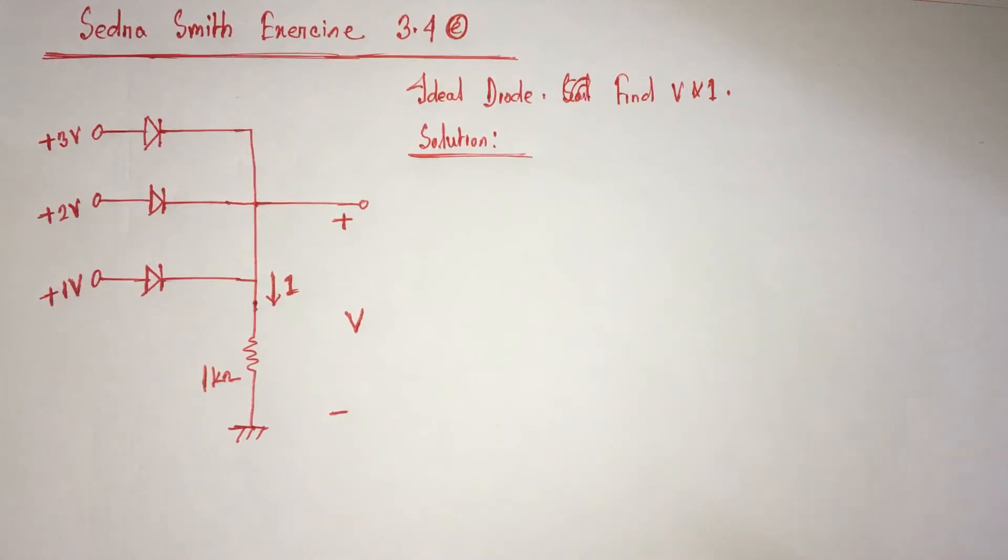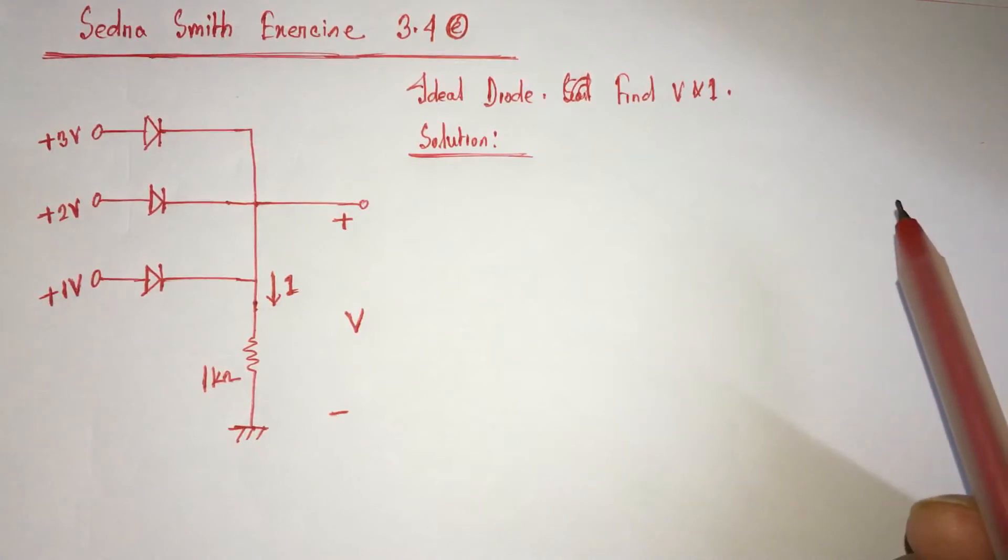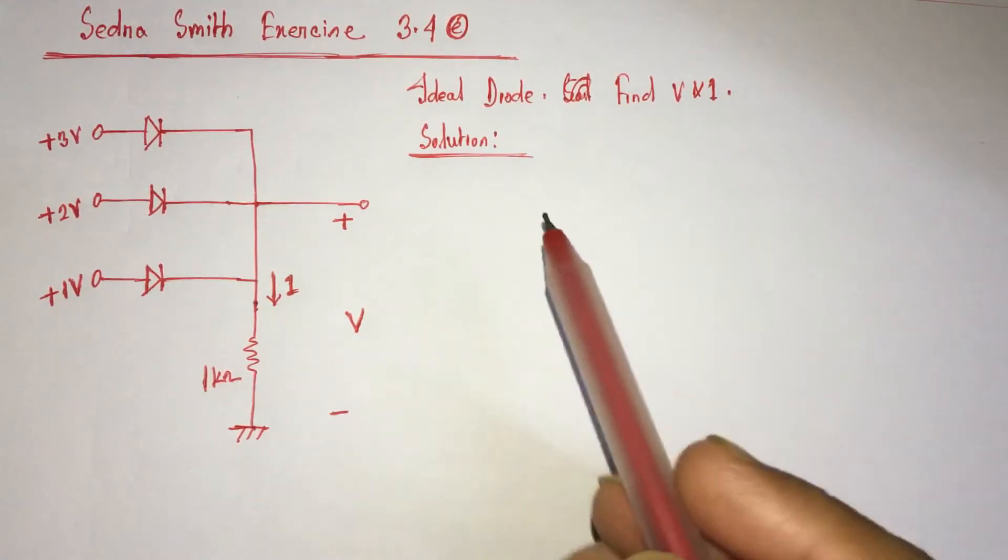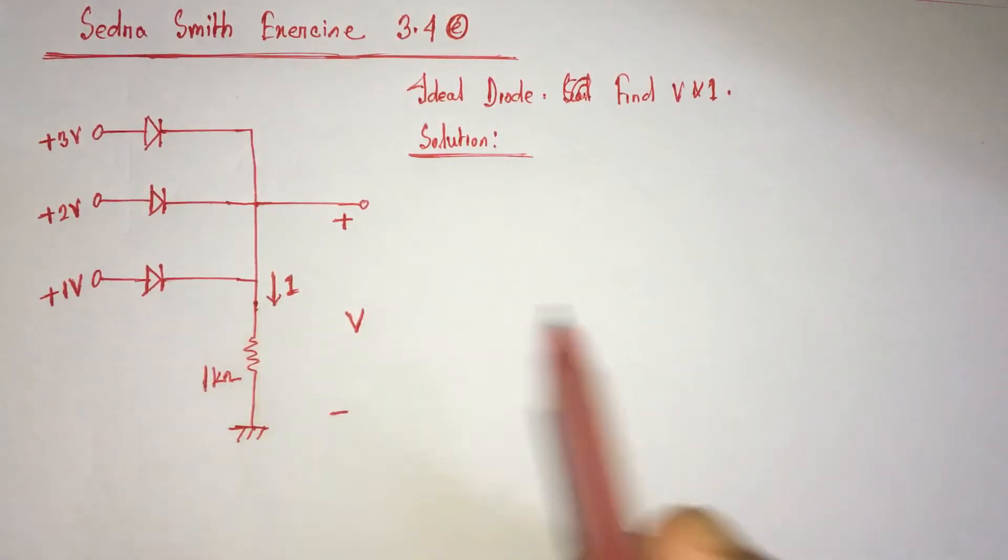Hi viewers, today we will solve exercise 3.4e from Sedra Smith. This is a bit complex diode related problem. Here all these diodes are ideal diodes and we have to identify the voltage V and current I.